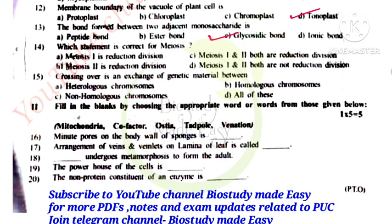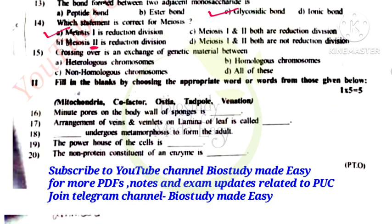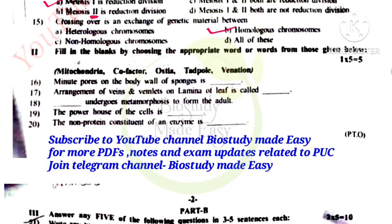Which statement is correct for meiosis? Meiosis 1 is reductional division, and meiosis 2 is equational division. Crossing over is the exchange of genetic material between homologous chromosomes.